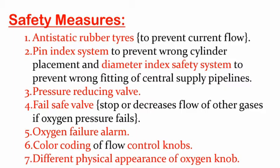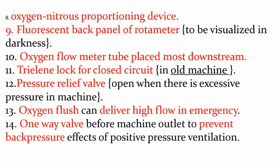There are 14 points for safety measures. The first points include: anti-static rubber tires, pin index and diameter index safety measures, pressure reducing valve, fail-safe valve, oxygen failure alarm, color coding, and different physical appearance of the oxygen knob, nitrous oxide knob, and air knob.